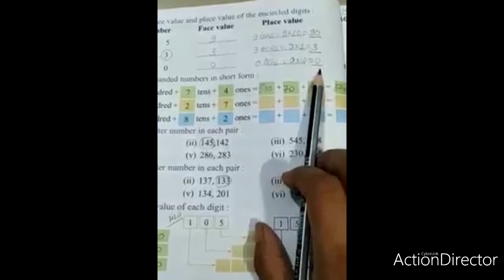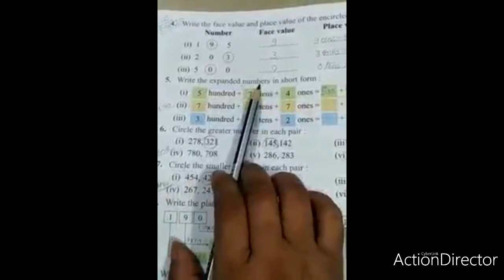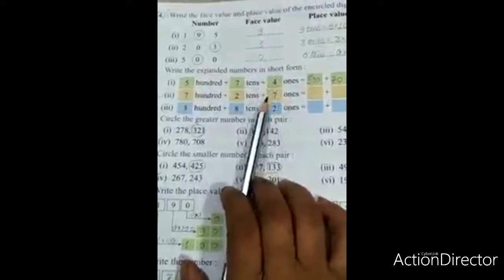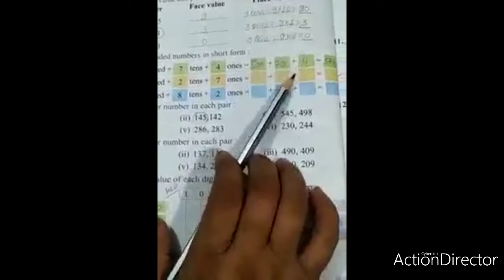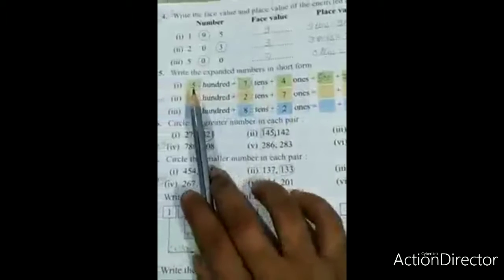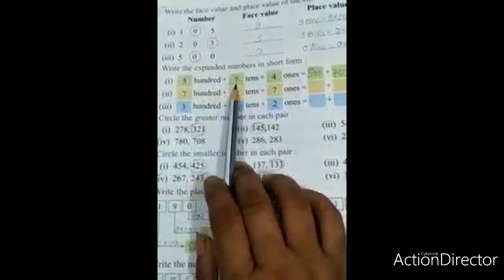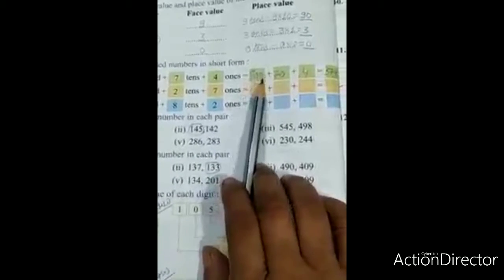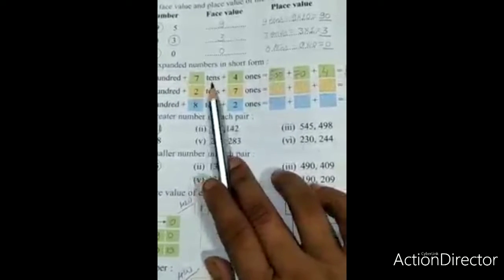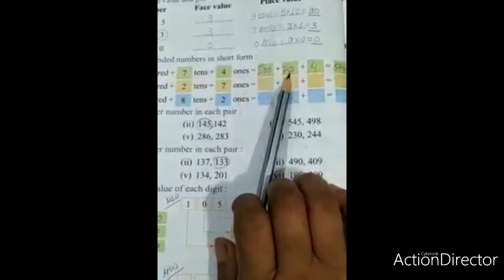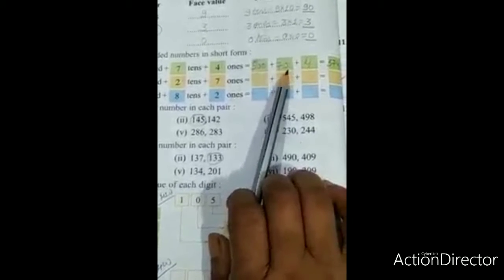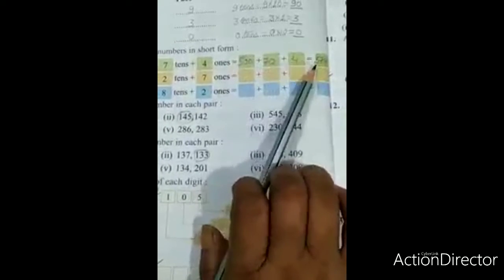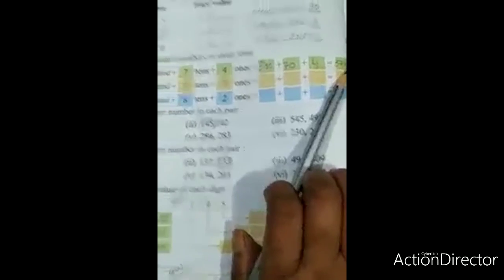Next question: Write the expanded number in short form. Here the number is written expanded, and you need to write it as a digit in short form. Number one: 500 plus seven tens plus four ones. First write in digit form: 500 plus seven tens is 70 (seven multiplied by ten, seven tens are seventy) plus four. What will be our answer? 574. So write here 574.